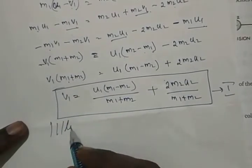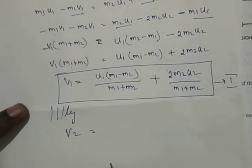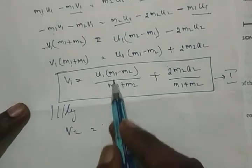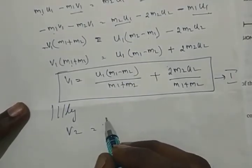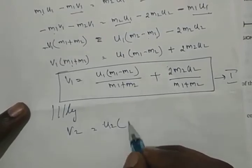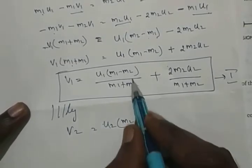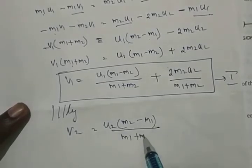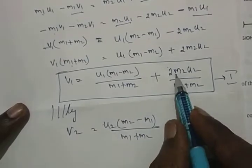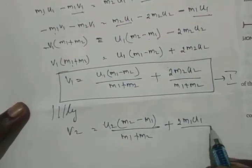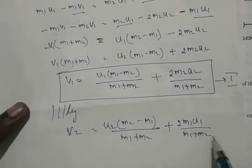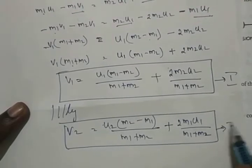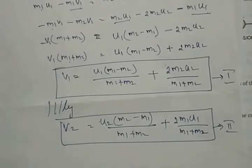Similarly, to find V2, use a mirror image substitution: wherever U1 appears put U2, wherever M1 appears put M2, and wherever M2 appears put M1. The denominator remains the same (M1 + M2). So: V2 = [(M2 − M1)/(M1 + M2)]·U2 + [2M1/(M1 + M2)]·U1. The second equation is a mirror image of the first.